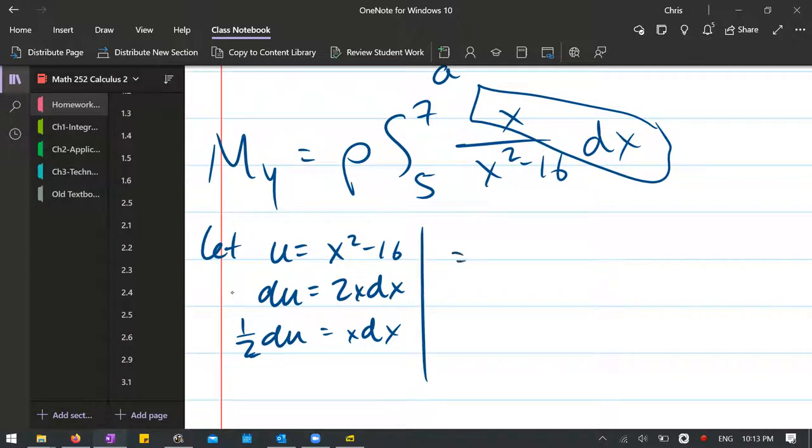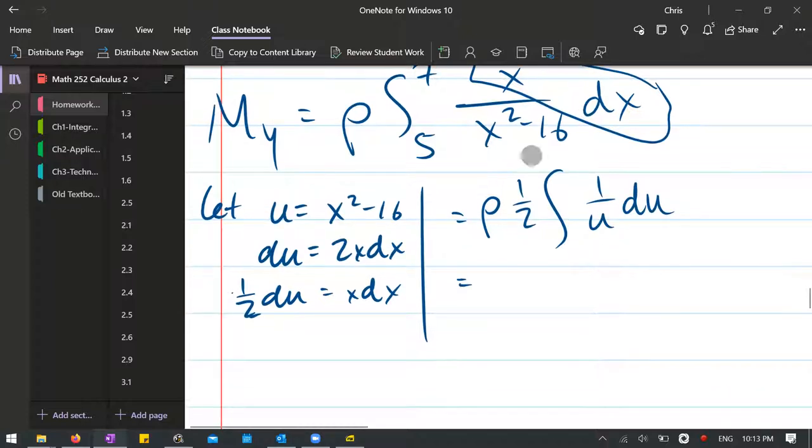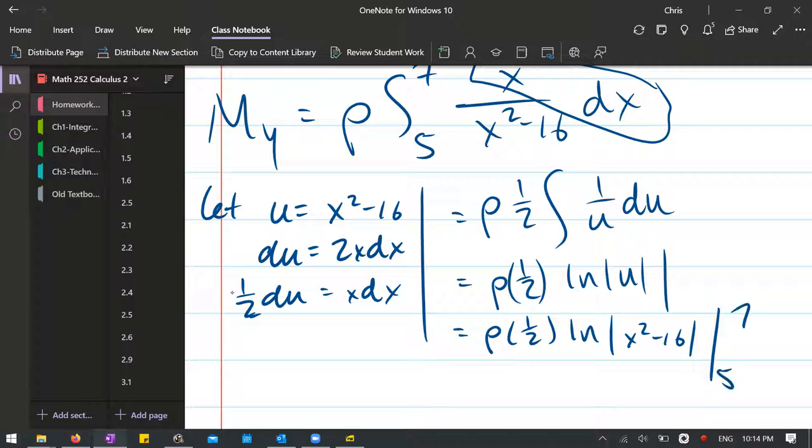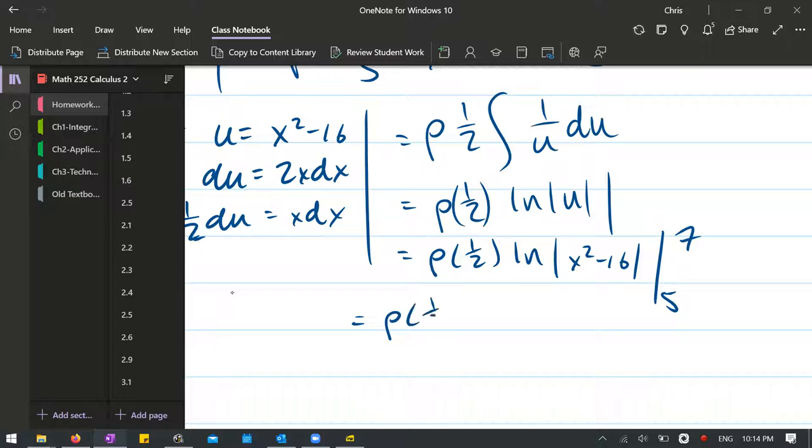So I can go ahead and make this rho 1 over 2 integral, 1 over u du. I already brought that 1 half out. Antiderivative 1 over u is ln. And I don't put my endpoints in yet because I have to go back to x's first. So we have x squared minus 16. Now I'm going from 5 to 7. So now I can plug these in.